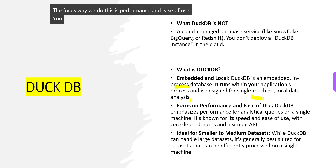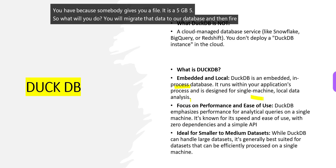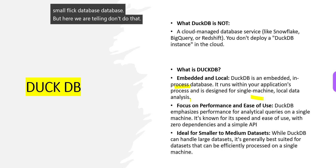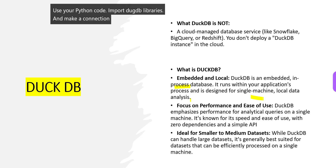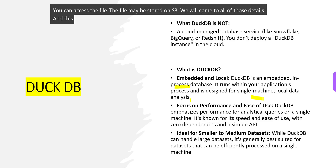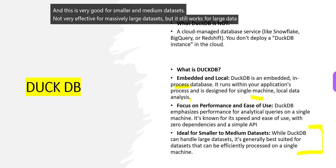Suppose somebody gives you a 5GB file. What would you normally do? You'd migrate that data to a database like Snowflake and then fire queries. But here the idea is: don't do that. Instead, import the DuckDB library in your Python code, make a connection to DuckDB, and you can access the file directly — even if it is stored on S3. This is very good for smaller and medium datasets, though it still works for large datasets.